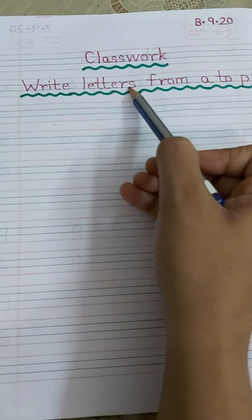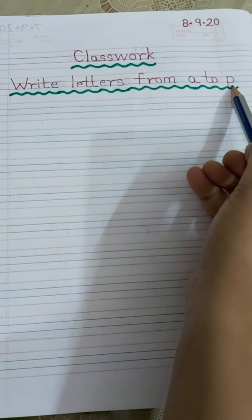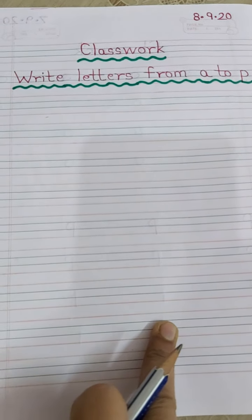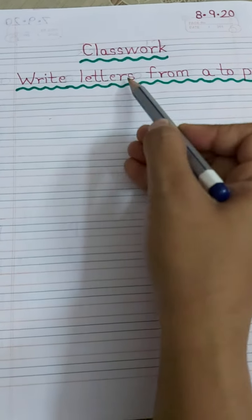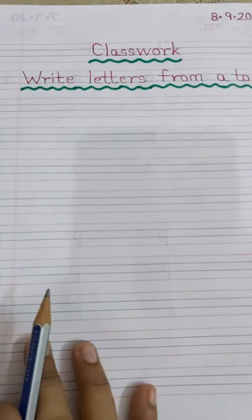Write letters from A to P. What you have to write? You have to write small letter A to P. You have read it and you all have written also in your notebook. So today we are going to write it down. Write down the heading. Write letters from A to P. Now look here how you have to do the work.